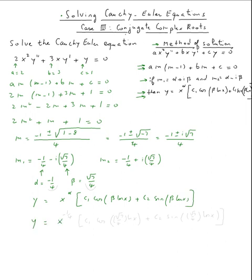The alpha is right here, negative one over four, c one cosine, the beta is right there, square root of seven over four times ln x.